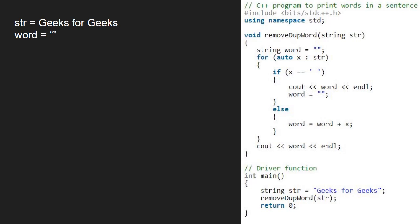We iterate in the for loop till str is not null and store each character in x. First x will be g which is the first character. Since x is not a space, we append it to word. So word will be g.